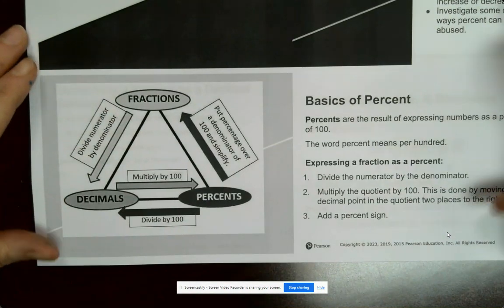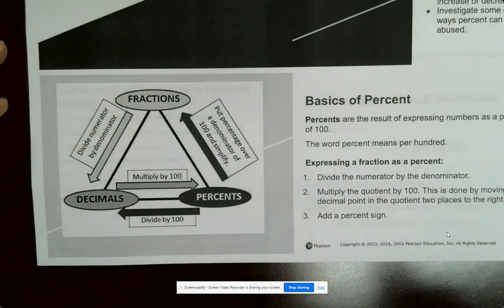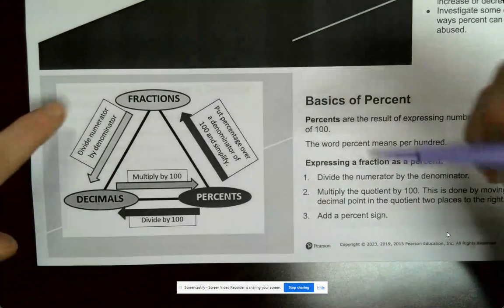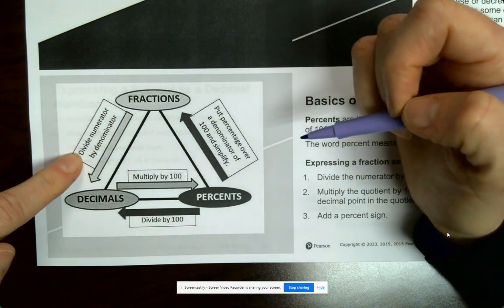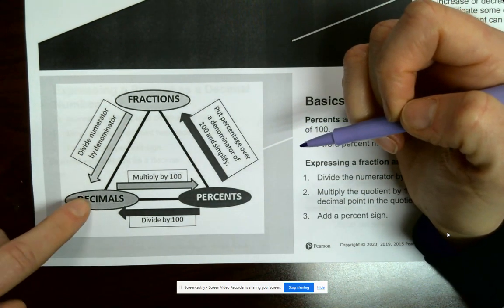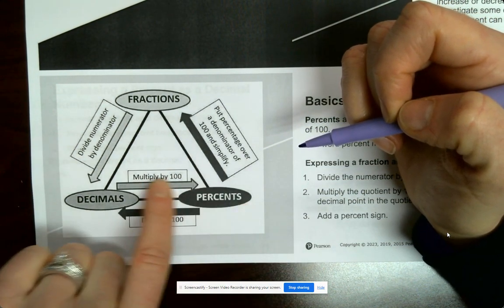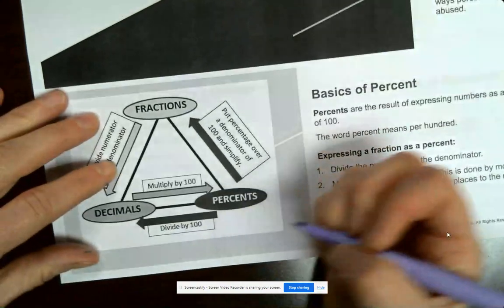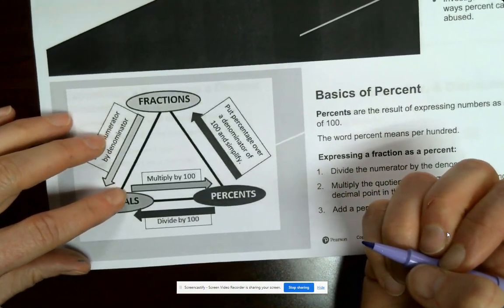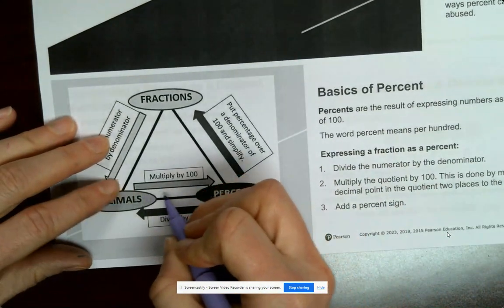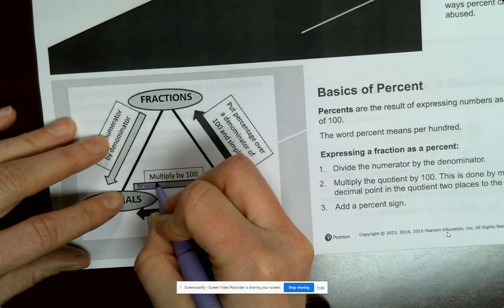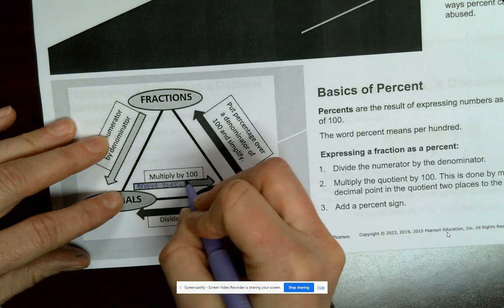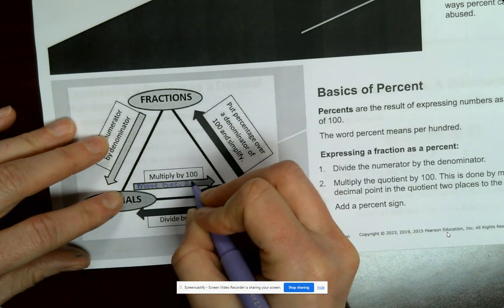So I'm going to start out with a fraction, decimal, percent triangle. To convert a fraction to a decimal, you're going to divide. From decimal to percent, you're going to multiply it by 100, or move your decimal two places to the right.